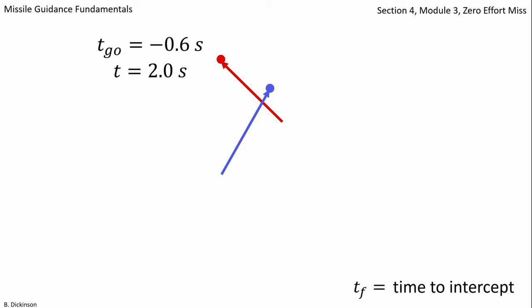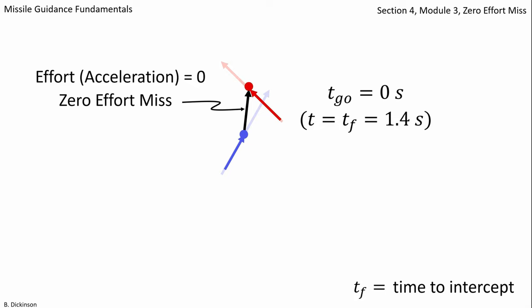But if we rewind 0.6 seconds to time-to-go equals zero, we have the miss-distance vector.